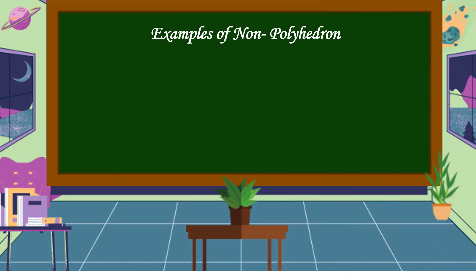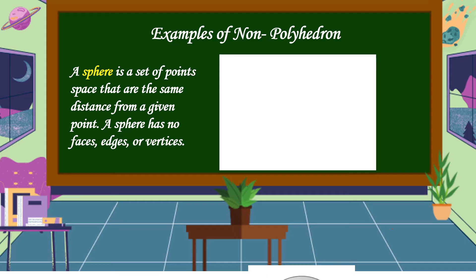Lastly is a sphere. What is a sphere? A sphere is a set of points in space that are the same distance from a given point. A sphere has no faces, edges, or vertices.